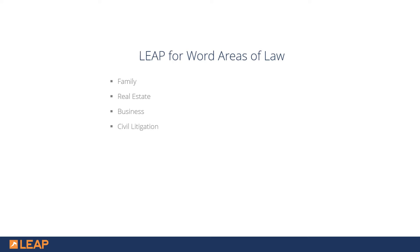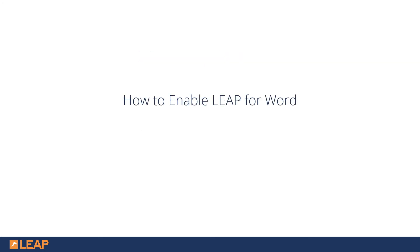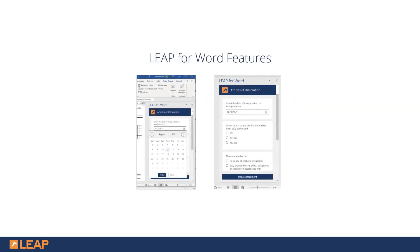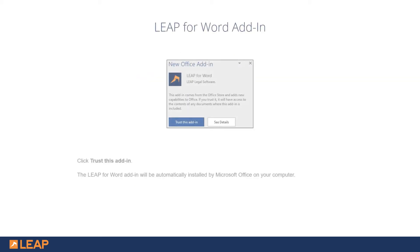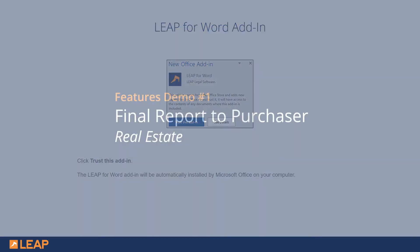Thank you for your insights, Jennifer — we look forward to more webinars with the content forms team. Now let's dive into the features. First, a quick review of how to enable LEAP for Word. The LEAP for Word add-in makes it easier than ever to automate forms from directly within a document. When opening a supported form, you will be presented with a side panel containing a series of questions or requests for information that will populate to the document. When opening a form for the first time, you will be prompted to click 'Trust this Add-in,' and the LEAP for Word add-in will be automatically installed by Microsoft Office on your computer. This process is controlled by Microsoft Office and these prompts will not display once the LEAP for Word add-in is installed.